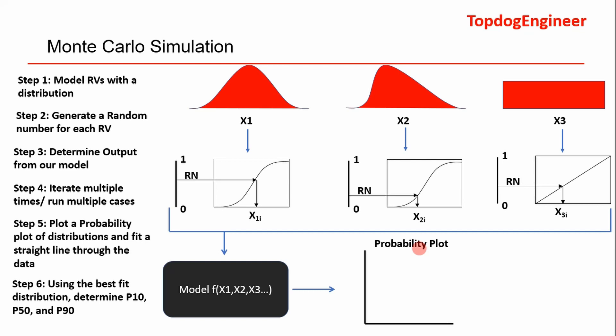Essentially how it applies to oil and gas is there's variables that have uncertainties across the board. I mean, it's amazing—your permeability values can vary, your pressure values can vary, basically any variable can vary from field to field.